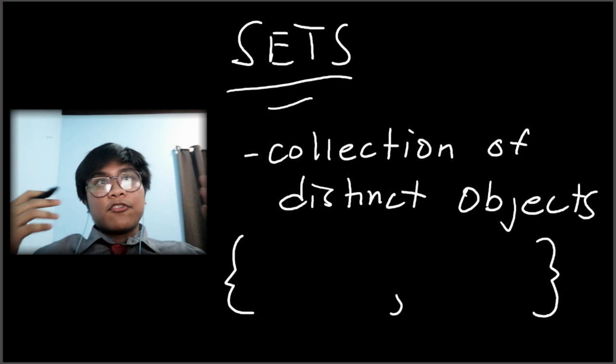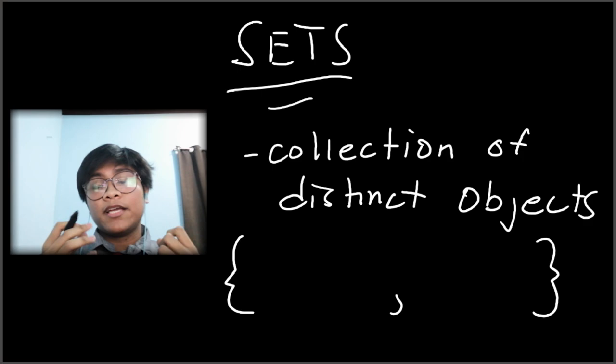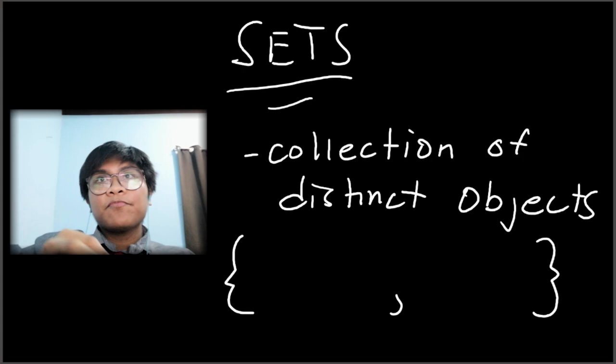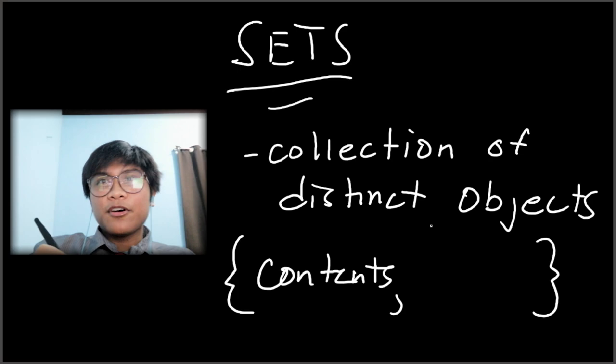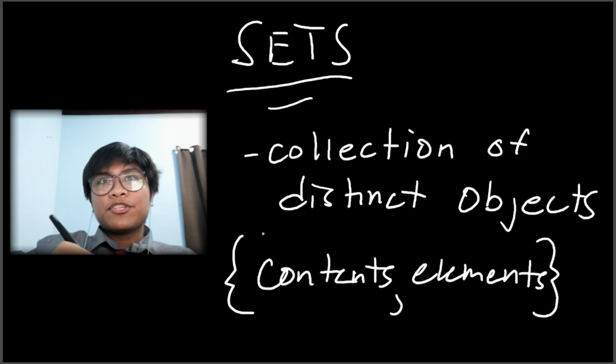As already mentioned, sets group objects together — but in more formal terms, the true definition of a set is a collection of objects. Sets can be defined by describing the contents or by listing the elements. This is done through the necessary use of enclosing curly brackets.